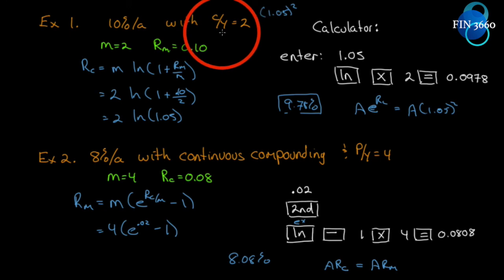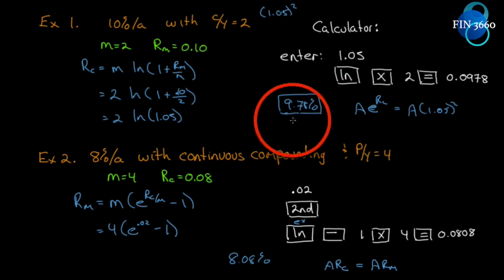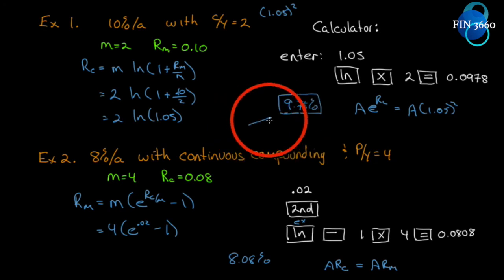Students are very good at getting to the number 9.78% but then they lose it when asked what it means — that's not the end of the question. This is what a computer can do; we don't need you if that's all you can do. You have to take it one step further and be able to interpret the result. Okay, let's move on.